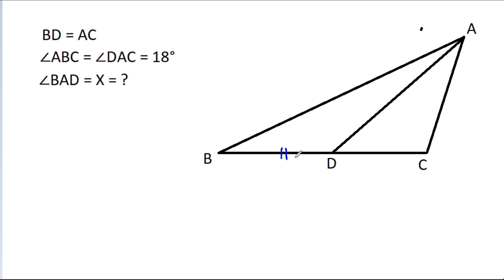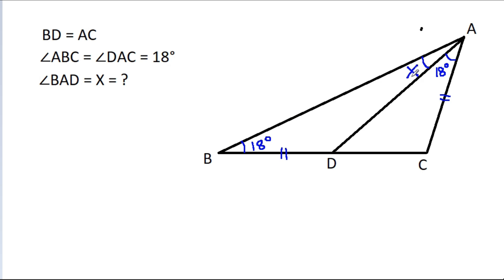We have been given that BD is equal to AC, angle ABC is 18 degrees, angle DAC is 18 degrees, and angle BAD is x. We have to find x.